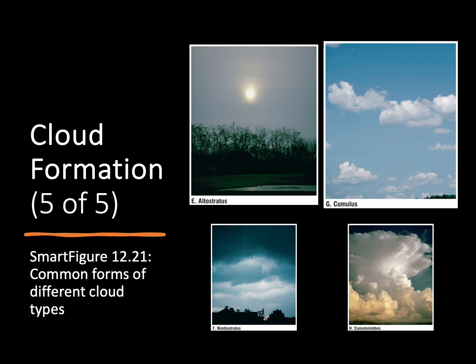Here we're looking at four more cloud types. Up at E is our altostratus — a sheet cloud found in the middle of our atmosphere. Over at G, we have cumulus clouds, which are just our average good-weather clouds found in lower layers of the atmosphere. The bottom two are responsible for precipitation and storms: on the left, nimbostratus — those dark gray clouds that bring a lot of rain. And on the right, cumulonimbus — the cloud of vertical development going from really low to really high elevations. These produce the most severe weather, whether we're talking about hail, tornadoes, or even hurricanes.